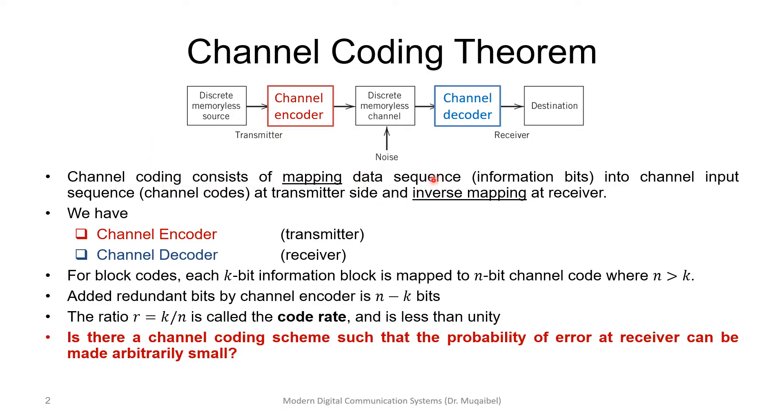In channel coding, we are interested in coding the sequence to be appropriate for the channel. So we map the input data or sequence into a channel input sequence at the transmitter side.